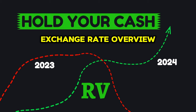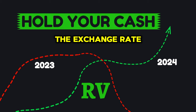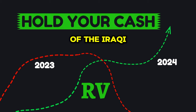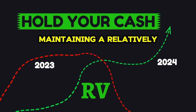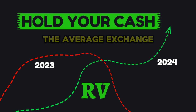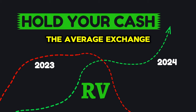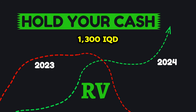Exchange Rate Overview — 2023: The exchange rate of the Iraqi Dinar to the U.S. Dollar in 2023 fluctuated slightly, maintaining a relatively stable trend throughout the year. The average exchange rate was approximately 1,300 IQD per USD.